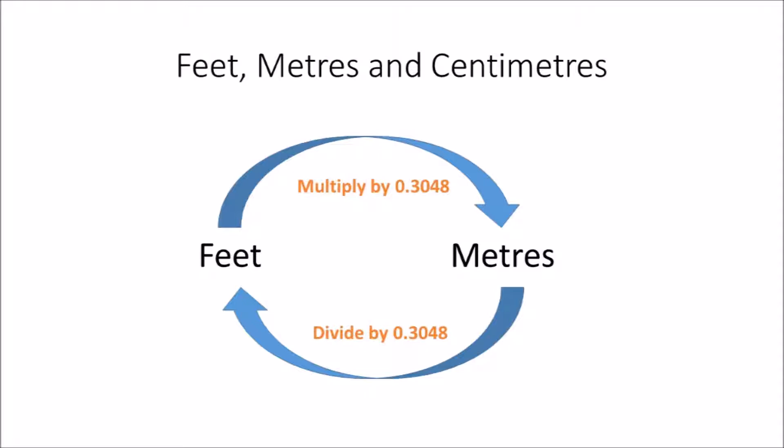To convert feet to centimeters, you multiply the amount you have in feet by 30.48. If you want to convert centimeters to feet, you divide the amount in centimeters by 30.48. The conversion factor here is 30.48.